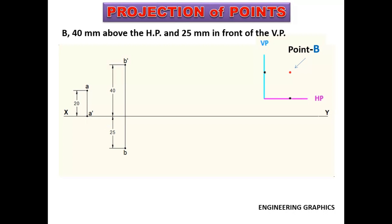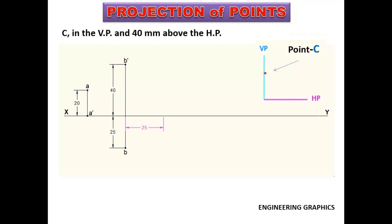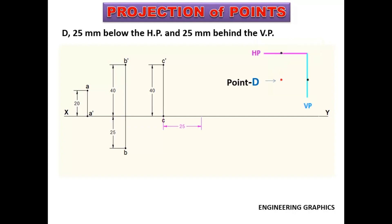Point C is in the VP and 40 mm above the HP. Since the point is 40 mm above HP, elevation will be 40 mm above the XY line. The point is in VP, so the plan is to be drawn on the XY line. Point D is 25 mm below the HP and 25 mm behind the VP. The point is 25 mm below HP, so the elevation is 25 mm below the XY line.